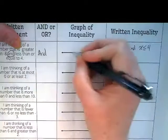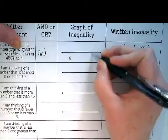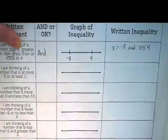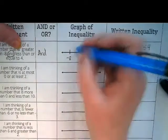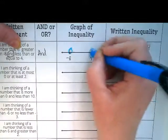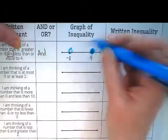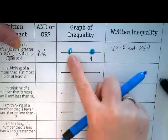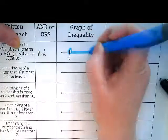So on our graph we're going to show the negative 8 and we're going to show the 4. We're going to circle them both. Only one of them gets filled in. Which one? 4. The 4. And because we're saying greater than negative 8, less than or equal to 4, our line goes between to show this as an and inequality.